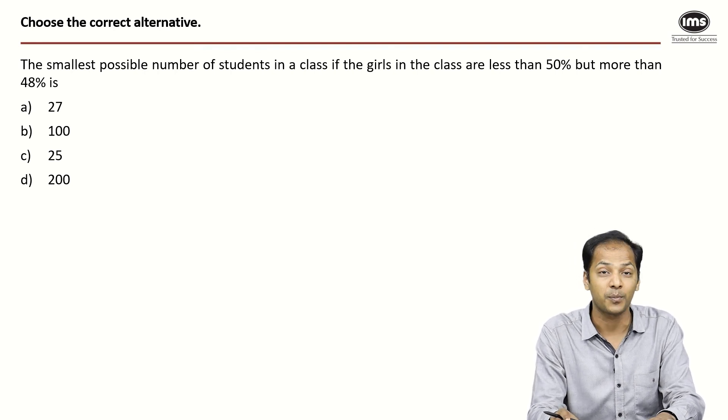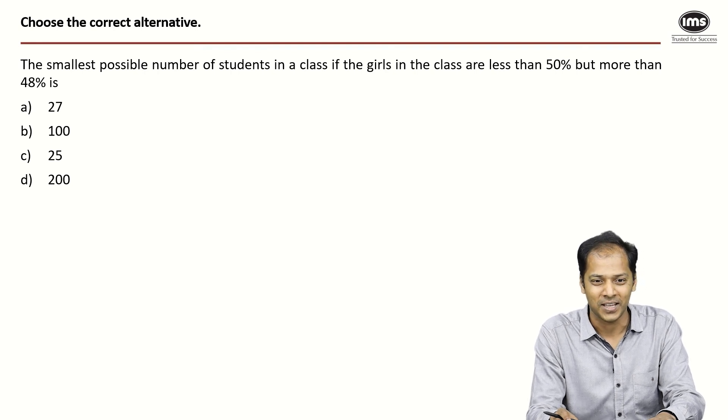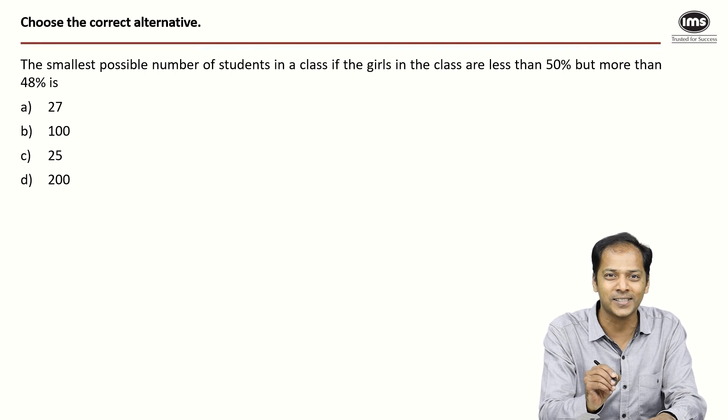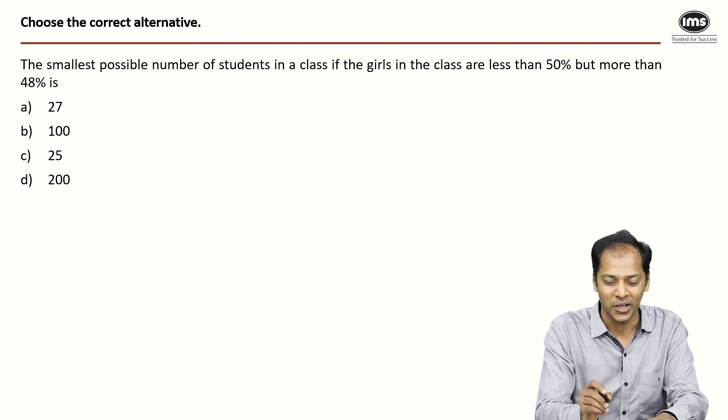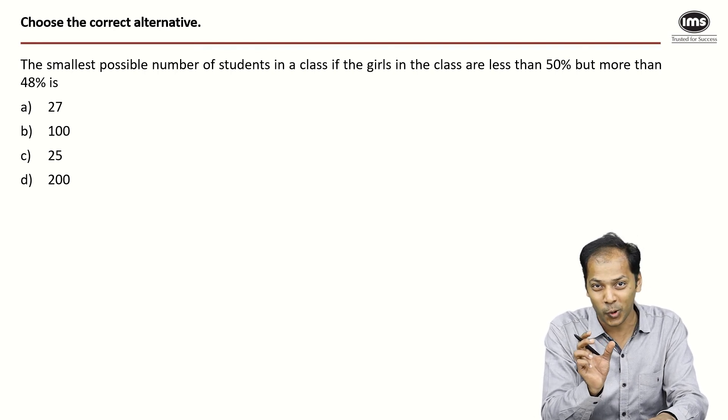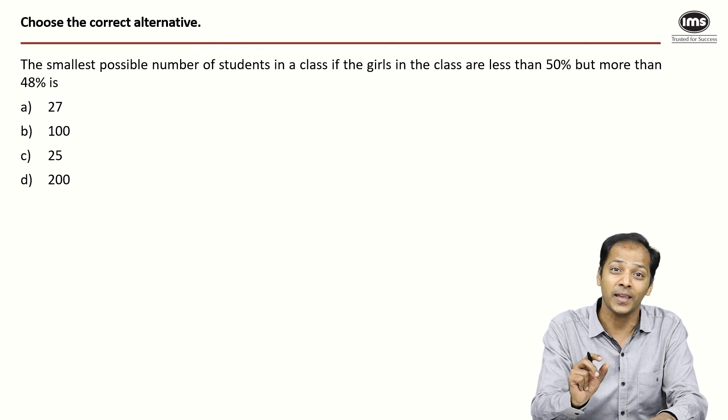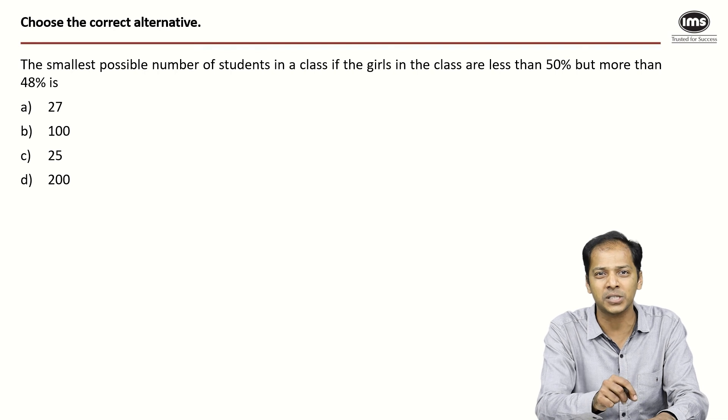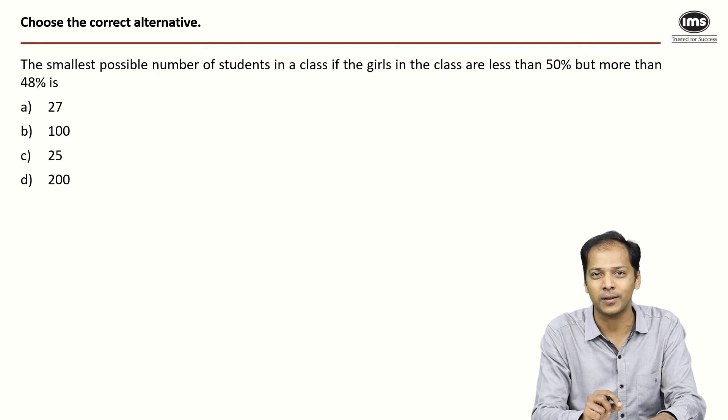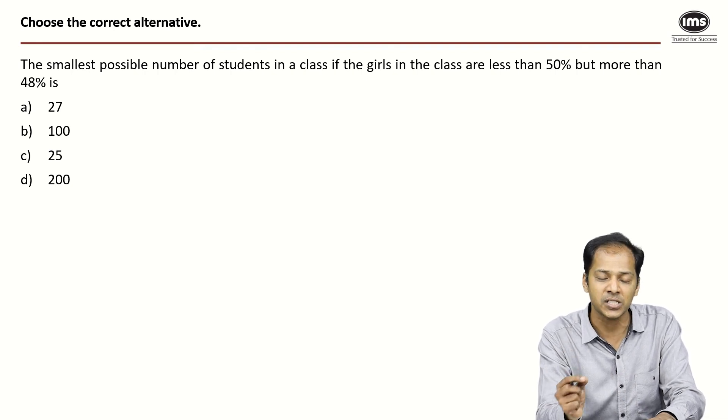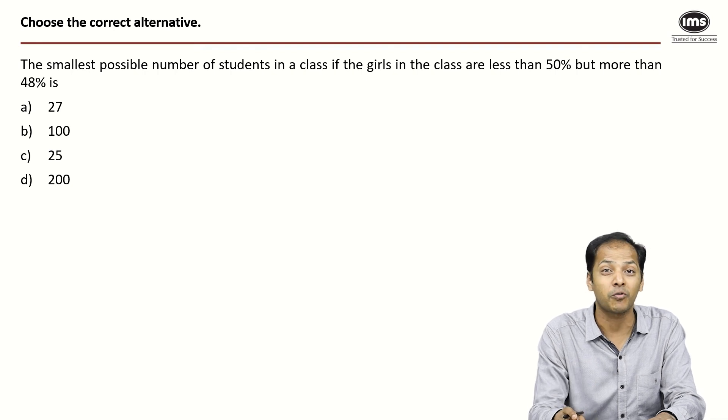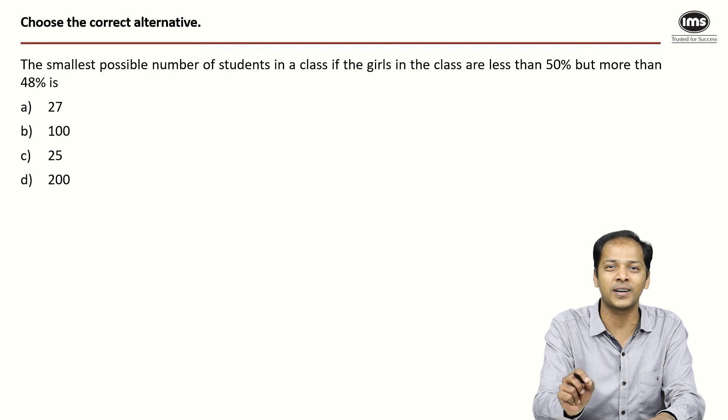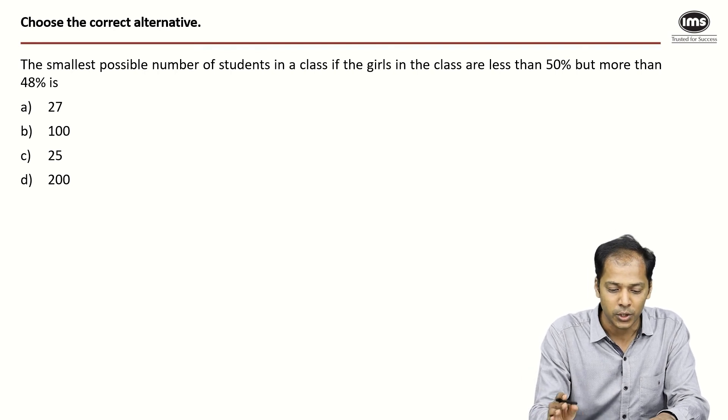When you read this question you should understand that it's not a straightforward percentages question. Based on the total number, you had to identify what kind of percentages are possible and among the options given what would be the smallest total that can give you a percentage between 48% to 50%.